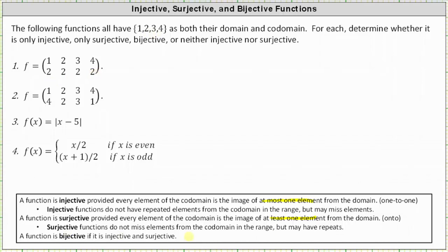Surjective functions do not miss elements from the codomain in the range but may have repeats. The function is also not injective because injective functions do not have repeated elements from the codomain in the range. Because the element two from the codomain is repeated, the function is also not injective. Number one is neither injective nor surjective.